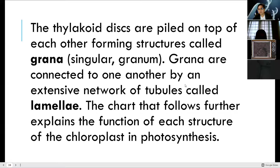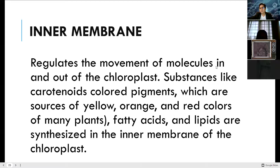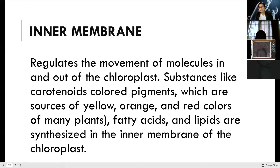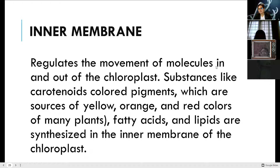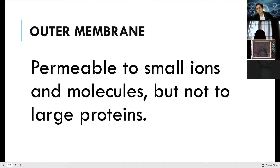Let's move forward to the inner membrane. The inner membrane regulates the movement of molecules in and out of the chloroplasts. We have two membranes in the chloroplast. Substances like carotenoids — the color pigments — the orange color of carrots are carotenoids or carotene, which are the source of yellow, orange, and red colors of many plants. Acids and lipids are synthesized in the inner membrane of the chloroplasts.